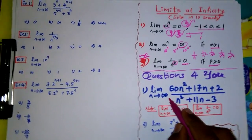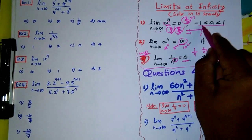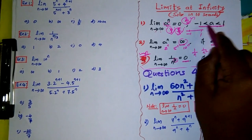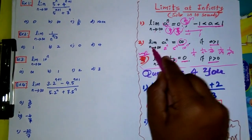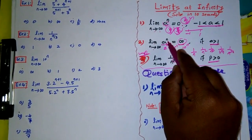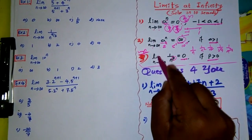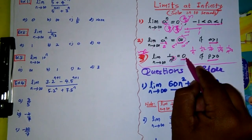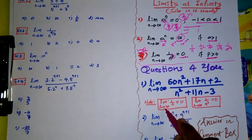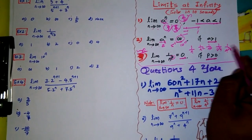Let us summarize the results. Limit n tends to infinity of a^n equals zero if a is between minus one and one (i.e., |a| < 1). Result two: limit n tends to infinity of a^n equals infinity if a is greater than one — for example 2^n, 5^n, 10^n. The most powerful result: limit n tends to infinity of 1/n^p equals zero if p > 0 — so 1/n, 1/n², 1/n³, 1/√n, 1/n^(5/2) are all zero.